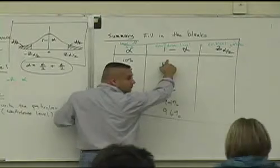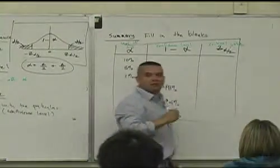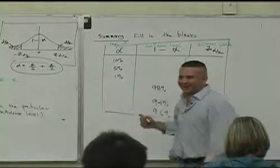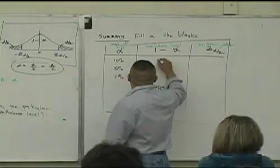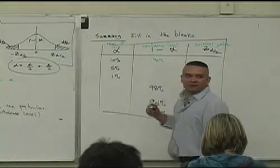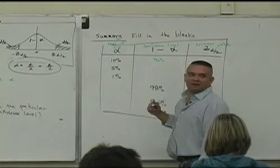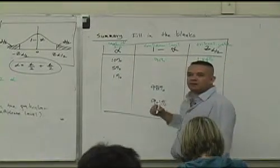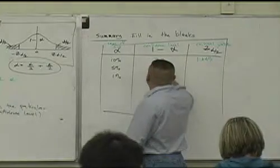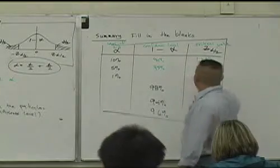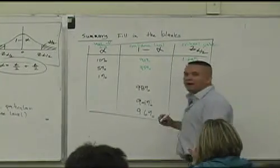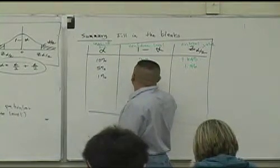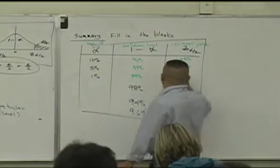If alpha is 10%, 5%, 1%, if 1 minus alpha is 98%, the confidence level is 94%, and what about if it's 96%? I want you to fill in the blanks, meaning that the first column of information is the level of significance. What's the second column? Confidence level. And then the last one? Critical value. 90%. What was the critical value associated with that? 1.645. What's the next one? 95%. What's the Z value? 1.96. What's the confidence level? 99%. What's the Z value? 2.575.